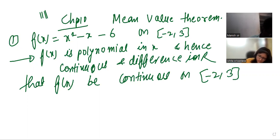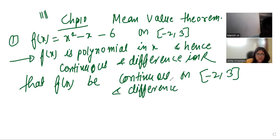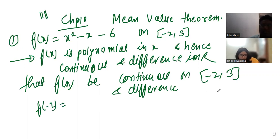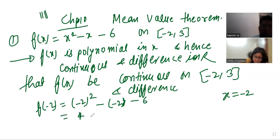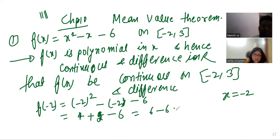Now put x = -2 in the function. It becomes (-2)² - (-2) - 6, which is 4 + 2 - 6 = 0. So f(-2) = 0.